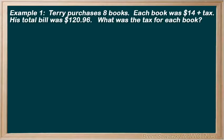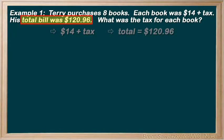Example 1: Terry purchases 8 books. Each book was $14 plus tax. His total bill was $120.96. What was the tax for each of these books? So for step 1, we read it carefully and make a few notes. Each one is $14 plus tax. The total bill is $120.96.